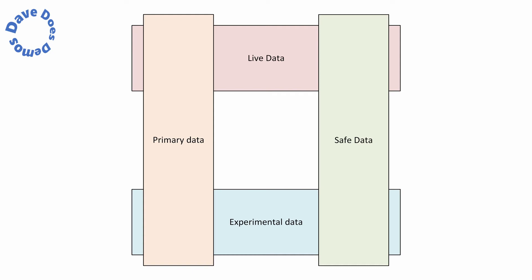When working with machine learning, we might be training on what people normally call 'production data,' but what we're going to call it is primary data — but it's experimental data, because we're not generally training the model on our live system. We're training on the same data that's in the live system, but we've taken a copy into an experimental area to work on, and for governance purposes that's very important. There are of course scenarios where you might be working on primary live data in the production environment, and being aware of that is of course a good thing — hence why this video exists.